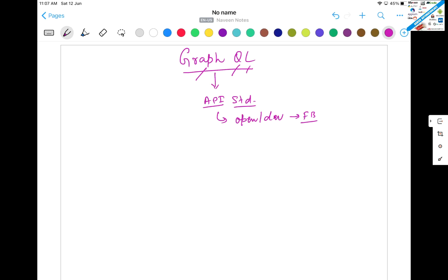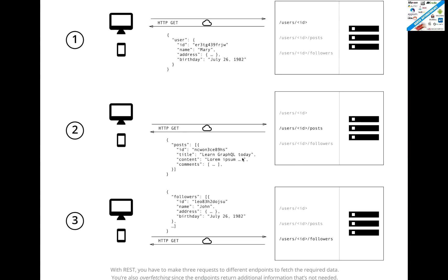Let's understand one problem that we were actually facing earlier. I'll show you one simple diagram here — this is a typical REST API. You are sending a request saying, okay, I want a user ID, and for that ID, I want some posts, and then I want to check how many followers I have for that particular user. So there are three API endpoints: user ID, post, and followers.